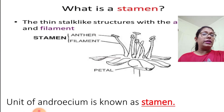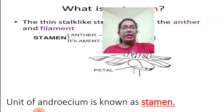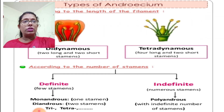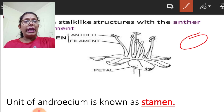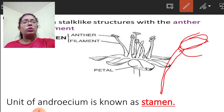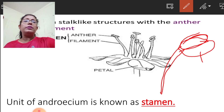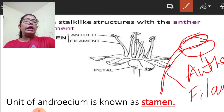The stamen is the unit of androecium and is the male reproductive organ. It has two parts: anther and filament. The anther is the bilobed upper part, and the filament is the thread-like structure below it. Together they form the stamen.